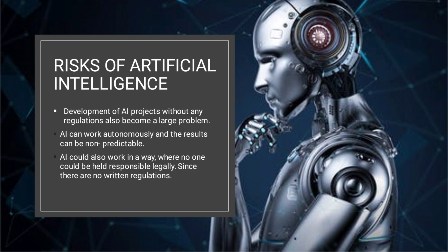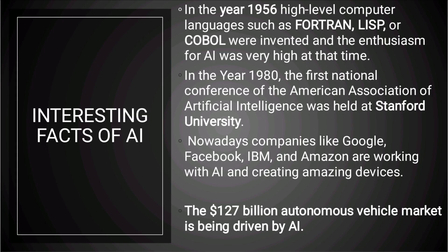Now my dear friend Prachi will tell you about some interesting facts about Artificial Intelligence. First, in the year 1956, high-level computer languages such as Fortran, Lisp, and COBOL were invented, and the enthusiasm for Artificial Intelligence was very high at that time. Second, in the year 1980, the first national conference of the American Association of Artificial Intelligence was held at Stanford University. Third, nowadays companies like Google, Facebook, IBM, and Amazon are working with Artificial Intelligence and creating amazing devices. Fourth, the $1.7 billion autonomous vehicle market is being driven by Artificial Intelligence.